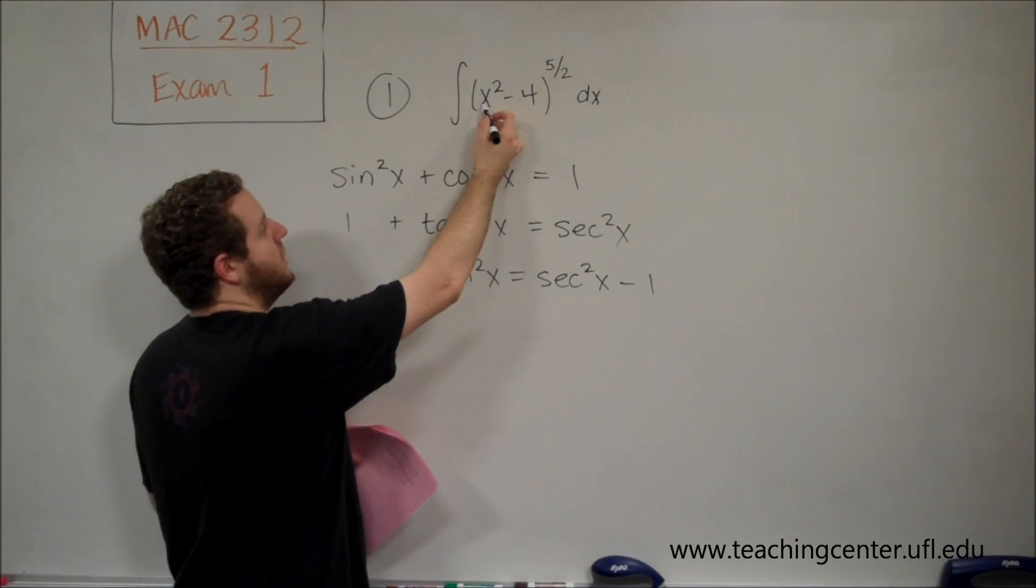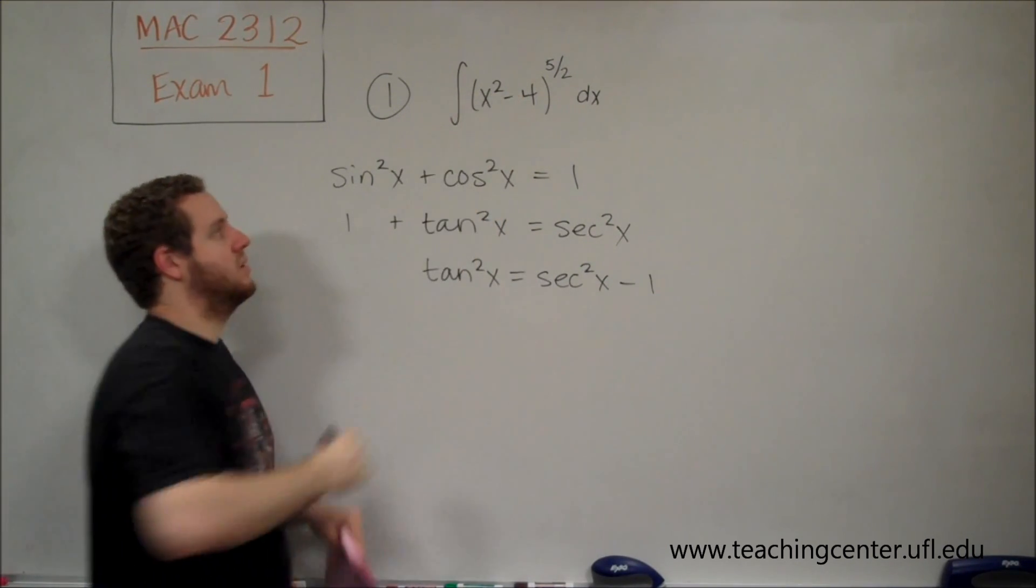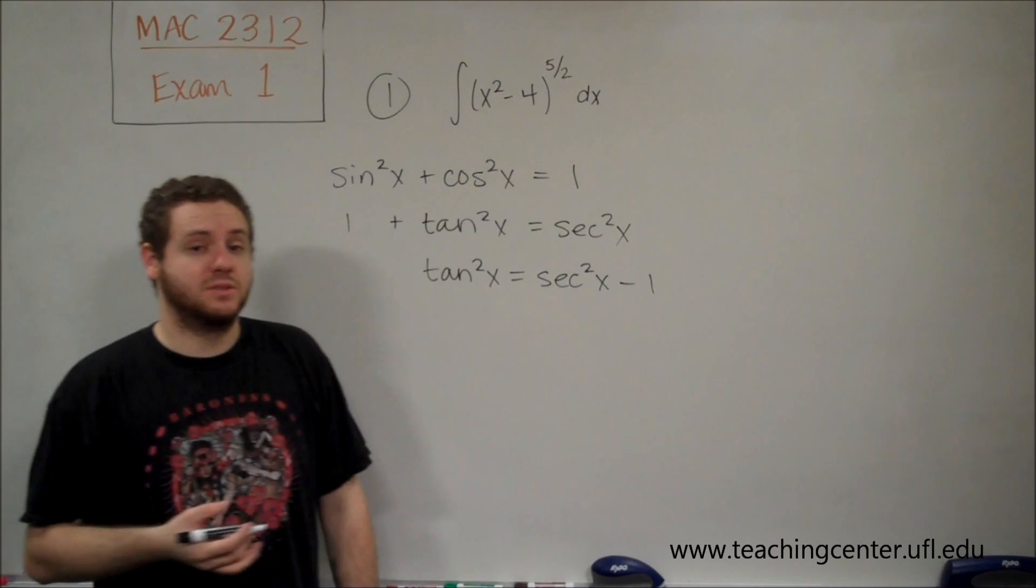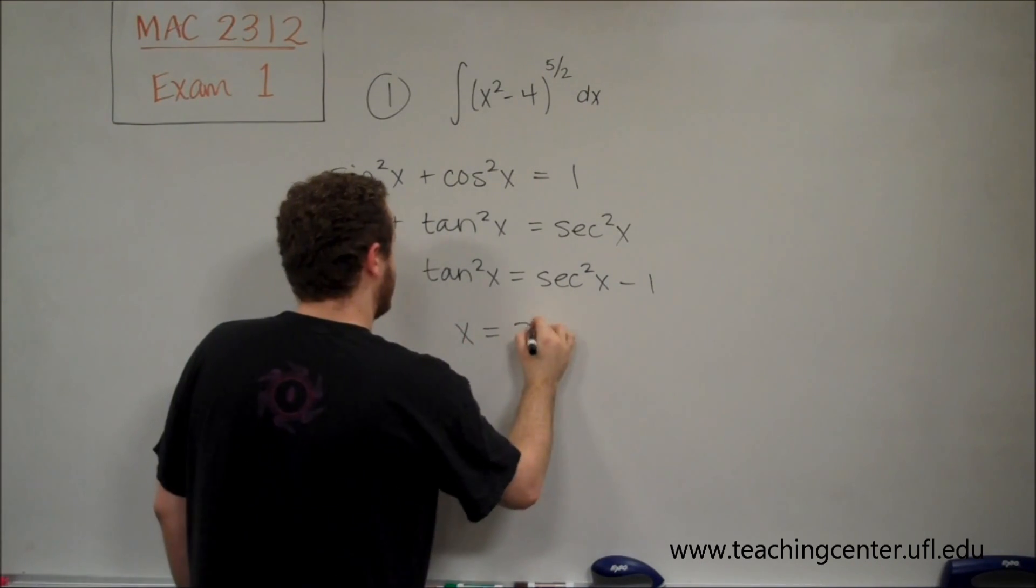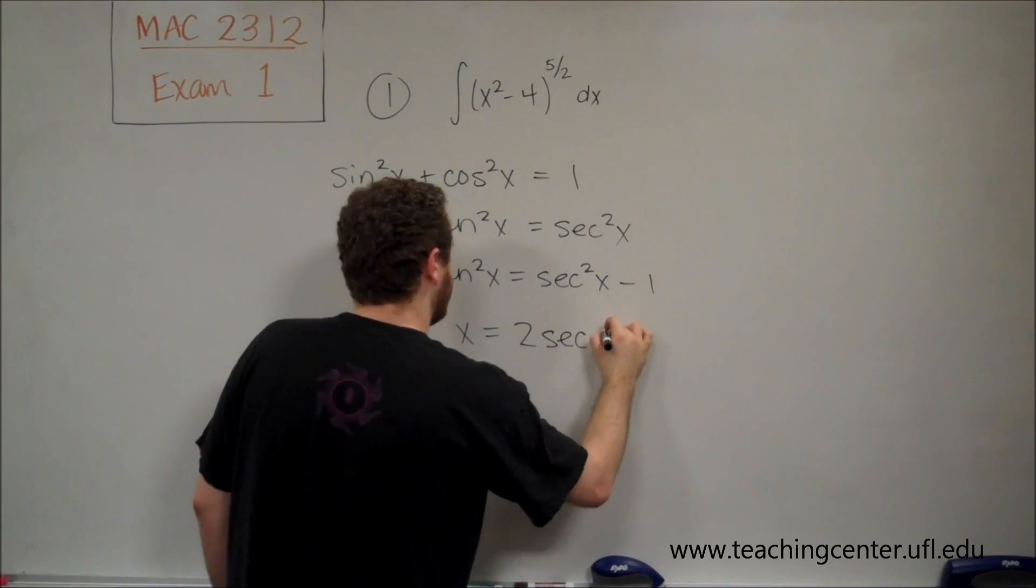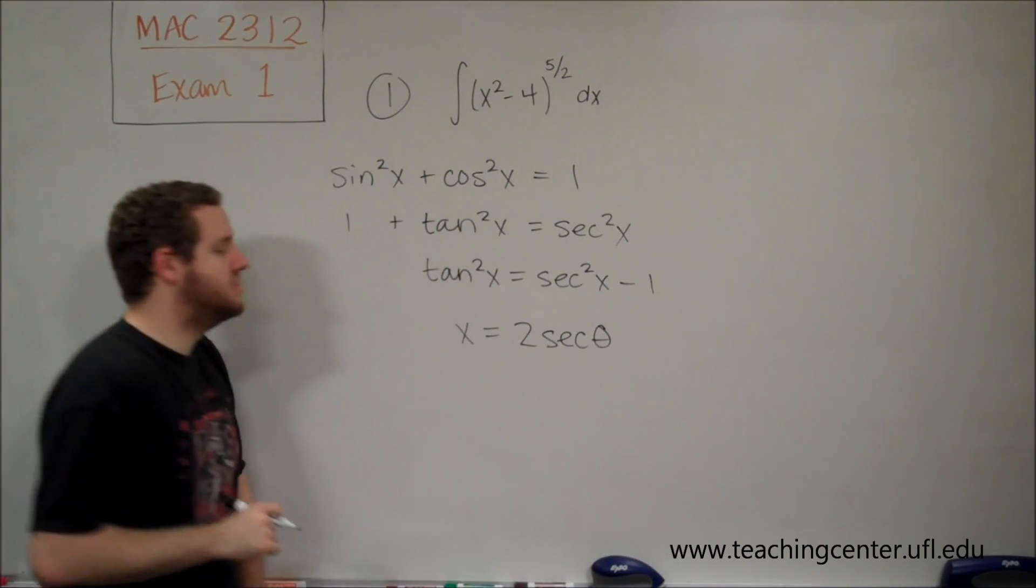So to get 4, we need to have a 2 in front of our substitution because it has to be squared. So that tells us that we want to use the substitution x equals 2 secant theta.